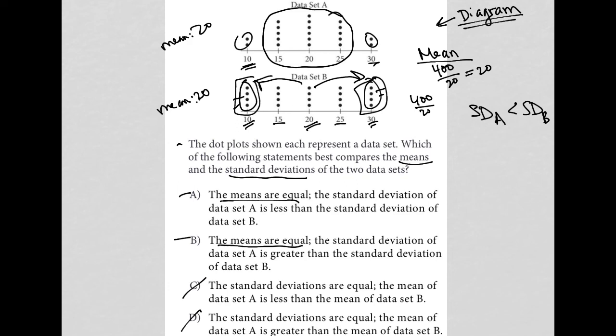So our answer here is yes, the means are equal. I'm looking at choice A. The standard deviation of data set A is less than, yes, perfect. So choice A is the best answer. Choice B just is the reverse of that. So no. So choice B is out. So A is the best answer here.